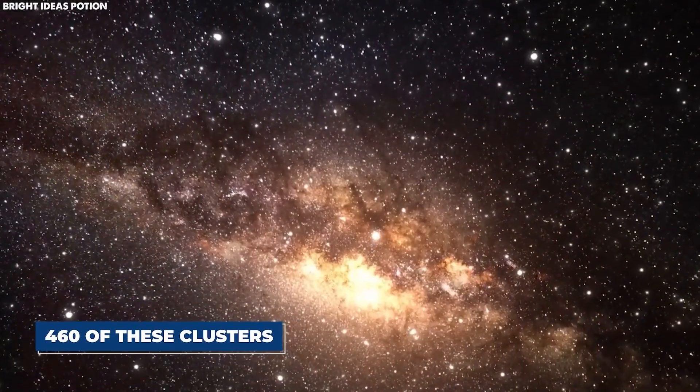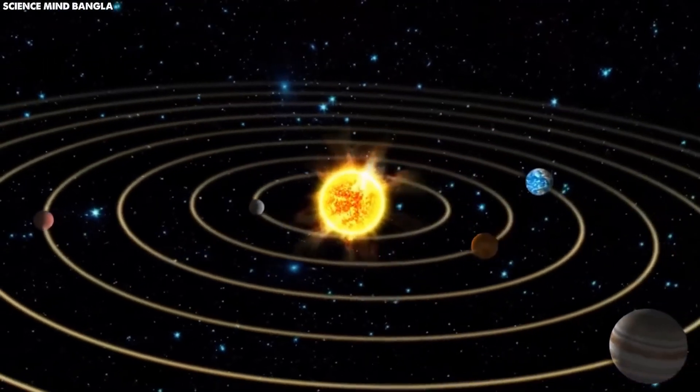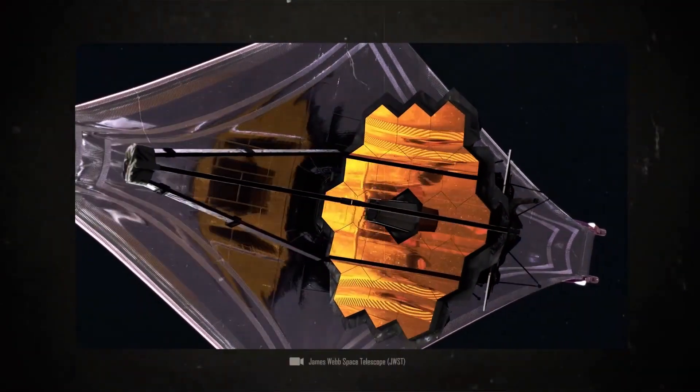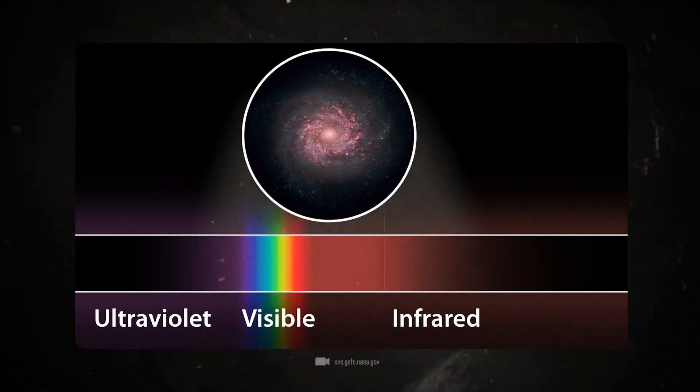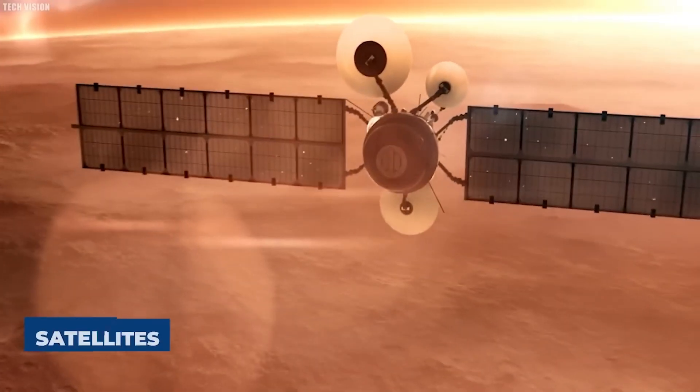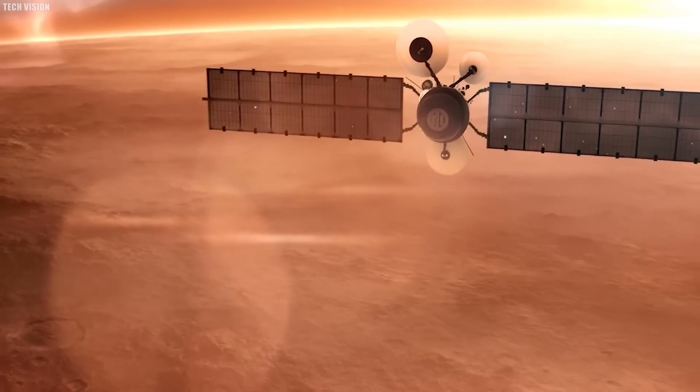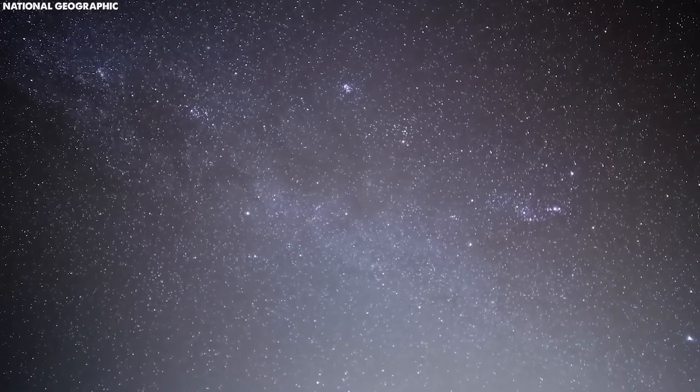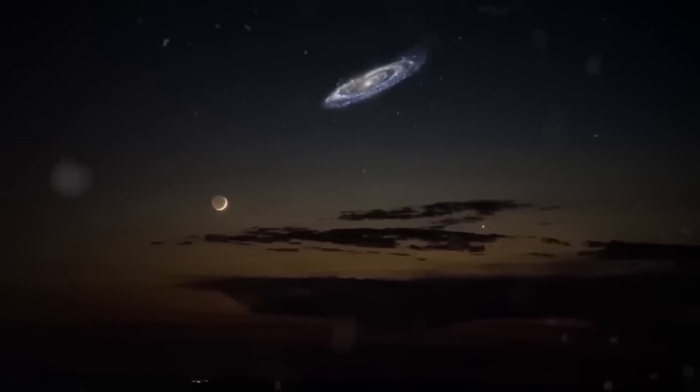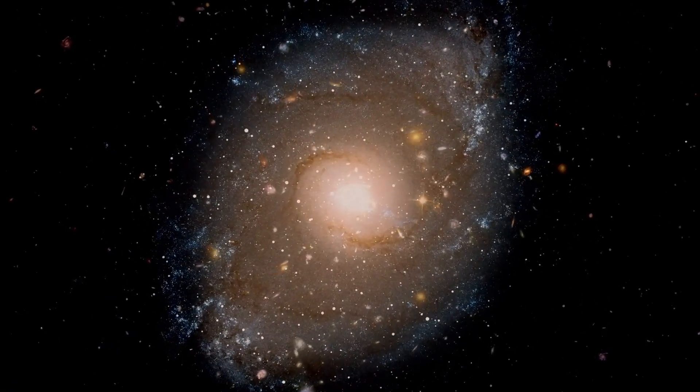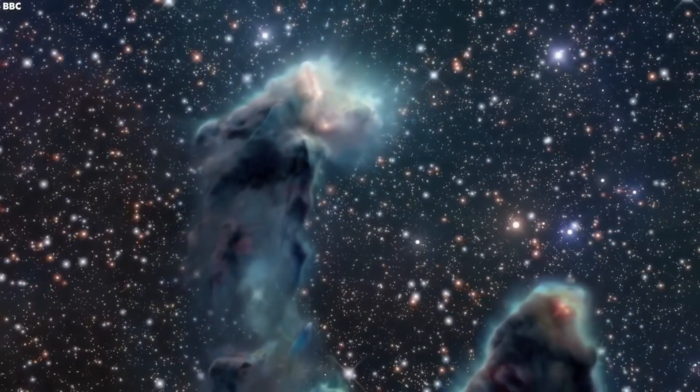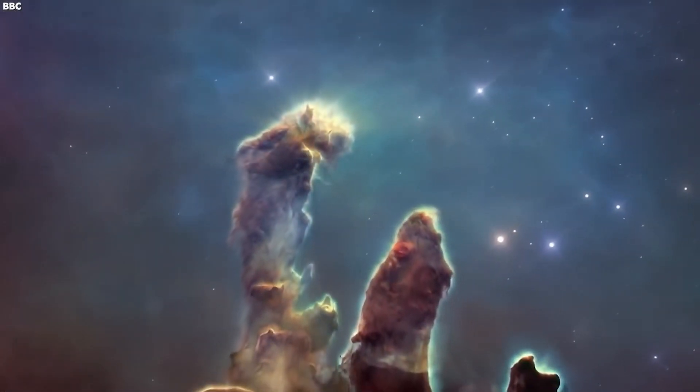The clusters of stars, called globular clusters, are particularly interesting to scientists. There are more than 460 of these clusters in Andromeda, and they provide valuable information about how galaxies like ours were born and how groups of stars behave together. Another interesting aspect of Andromeda is its collection of smaller galaxies that orbit around it like satellites. There are over 20 of these smaller galaxies, and some of them are gradually losing their stars and gas as they get too close to Andromeda. This process, known as galactic cannibalism, shows how galaxies can grow by swallowing up smaller ones.